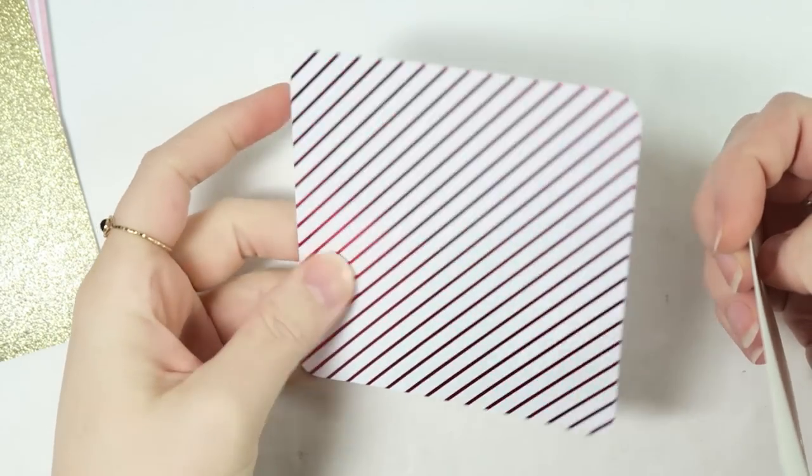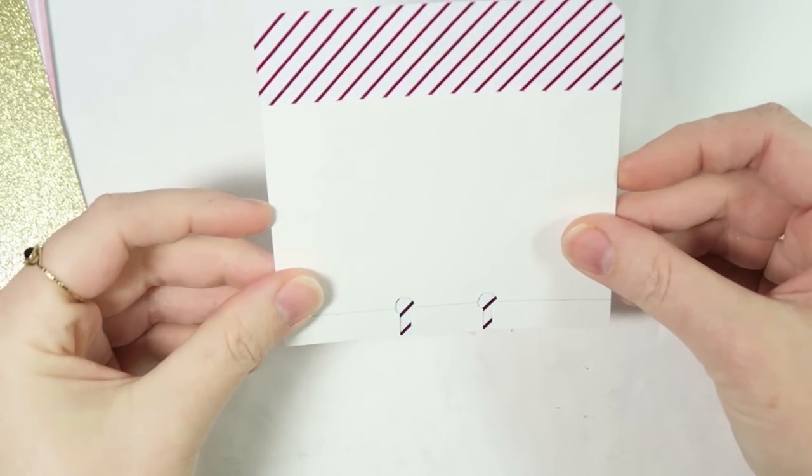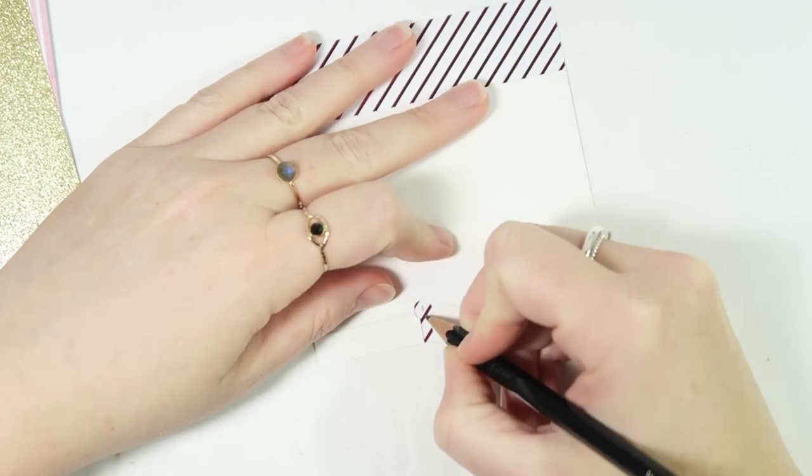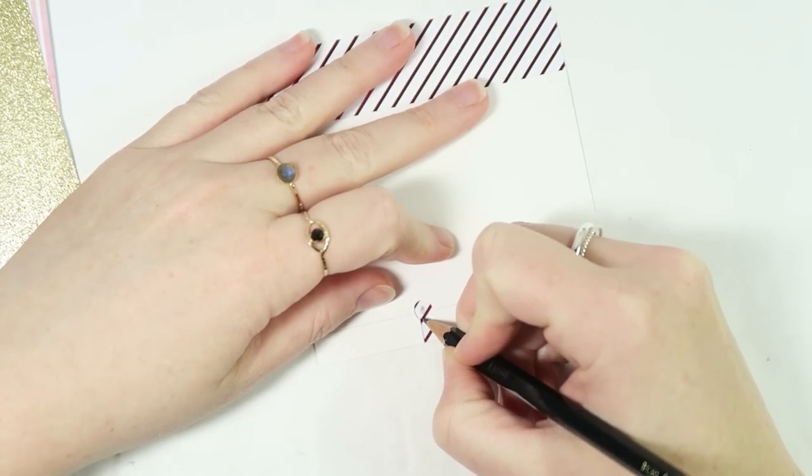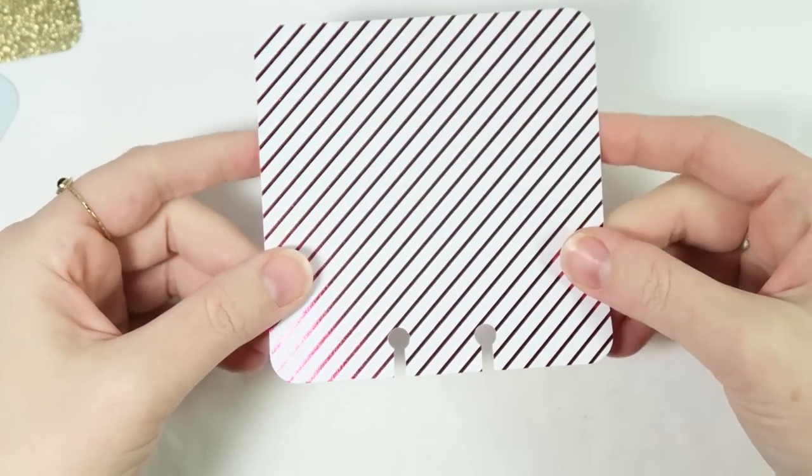Let's go ahead and do a few more of these. Here I've got my template again, and I have a four by four card. You can also do this with the four by fours. Just line it up, draw your guide, little punch marks, lines. That is what that one looks like. It's really pretty.